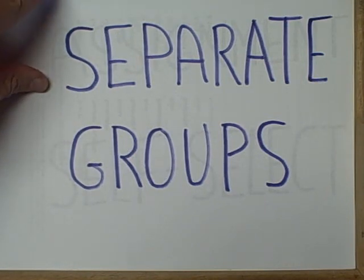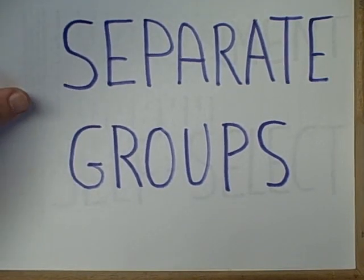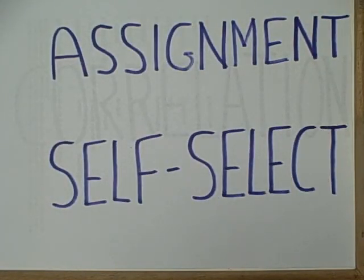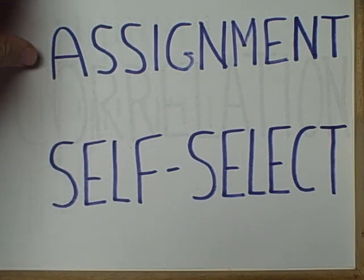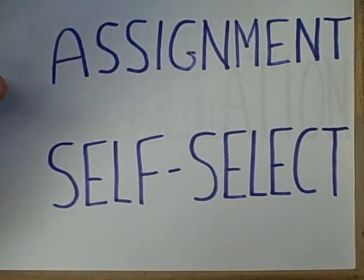Specifically, we would have problems if there are issues with assignment to the two groups. In an experiment, the assignment should be truly random. If we allow subjects to self-select into their groupings, that opens up the confounding variables that motivated them in their self-selection.